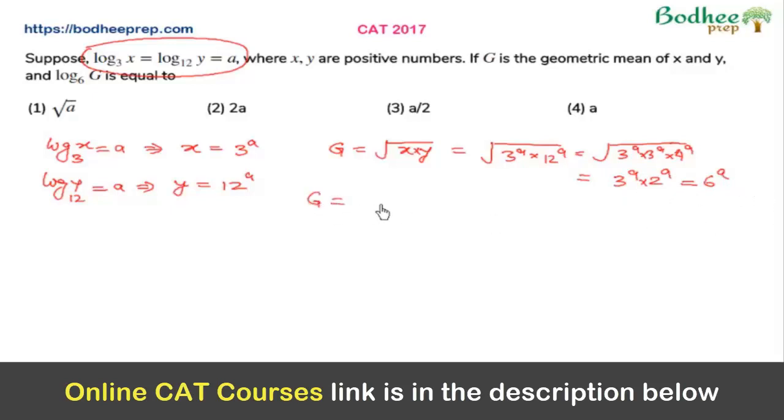So G is equal to 6 to the power a. If I apply log on both sides with base 6, then we can straight away get that log of G with base 6 will be equal to a. So the answer for this question is option 4.